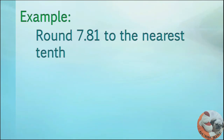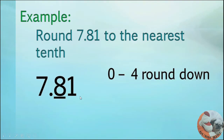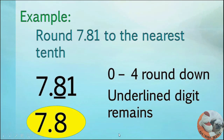Another example in rounding to the nearest tenth: round 7 and 81 hundredths to the nearest tenth. The tenths digit is 8. What is to the right of 8? It's 1. The rule when it's 0 to 4 is round down — the underlined digit remains. So 8 stays as 8. Copy the whole number 7, then 8 stays 8. If you round 7 and 81 hundredths to the nearest tenth, the answer is 7 and 8 tenths.